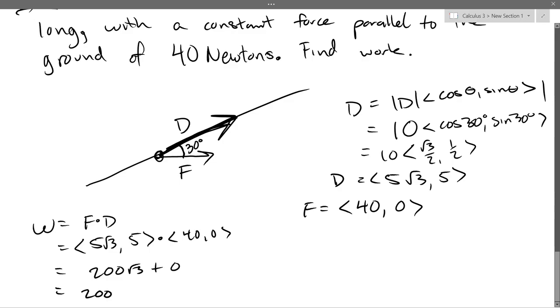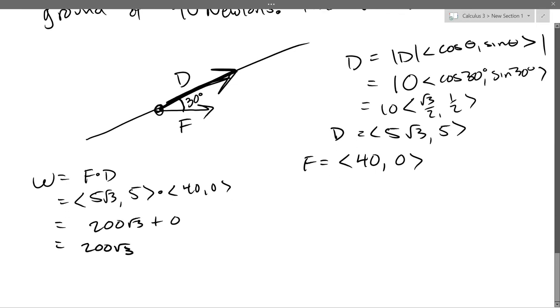So we've got 10 times square root of 3 over 2, comma 1 half. So it'll be 5 square root of 3 comma 5. So there's the easiest form of the displacement vector. F is super easy. You've got all horizontal, no vertical. So we're pushing with 40 newtons, 40 to the right, zero up. Now ready for work is the dot product. 5 times 40, 200. 200 square root of 3 plus 0. Newton meters? Right. Because we're measuring our force in newtons, our distance in meters, so it's in newton meters. Is this a joule? It is.